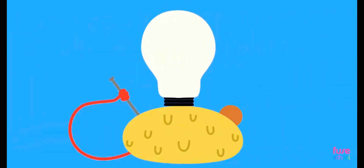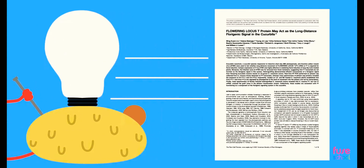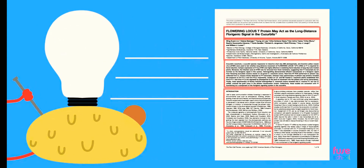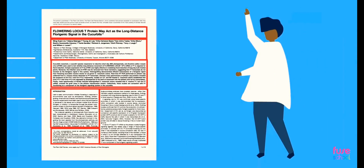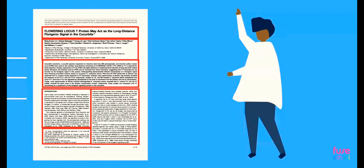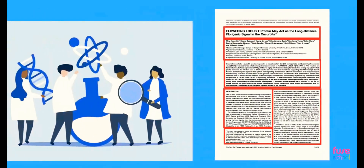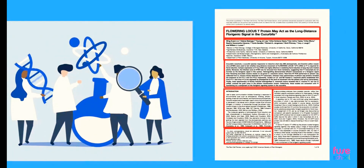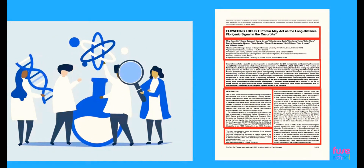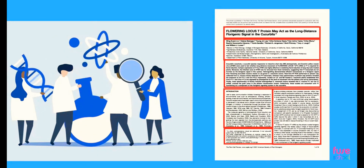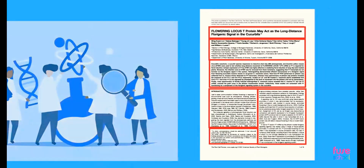When the results of the investigation are written up into a paper to be published, a set format is followed. Scientists must follow the format and rules of the journal where they intend to publish their work, so that other scientists can read and review their paper. The paper is written using the following sections.